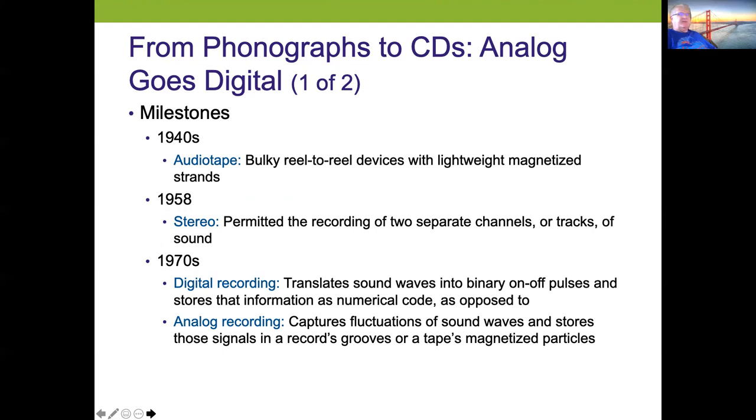In the seventies, digital recording started to translate sound waves into binary on/off pulses and store that information as a numerical code, as opposed to analog, which captures fluctuations in sound waves and stores those signals in records, groups, or tapes with magnetized particles. Digital obviously is higher quality.